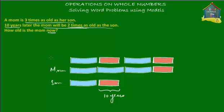So the mom 10 years later is one blue block, one pink block, then another blue block and another pink block. Now let's compare these two representations of mom's age 10 years later. The top row is one blue block, one pink block, one blue block, one pink block. The middle row is three blue blocks and one pink block.